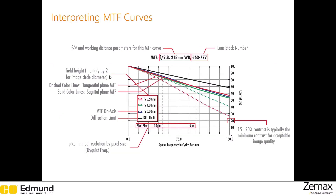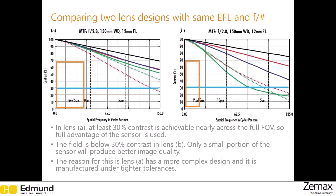This is what an MTF curve looks like. The F-number, the working distance, and the lens stock number are given at the top. The X-axis contains the spatial frequency and the Y-axis has contrast. The black line at the top denotes the diffraction-limited performance. The solid lines represent the sagittal plane and the dashed lines represent the tangential plane.